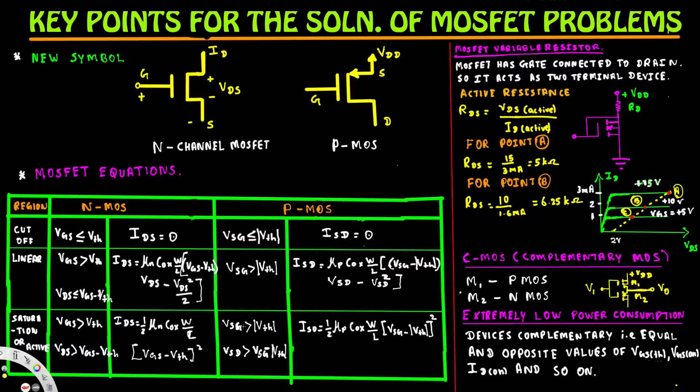For P-MOSFET to be in the saturation or active region, VSG has to be greater than V-threshold magnitude and VSD has to be greater than VSG minus |V_threshold|. In that condition, ISD equals (1/2) · mu_P · COX · (W/L) · (VSG − |V_threshold|)².